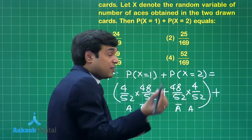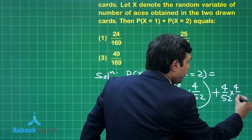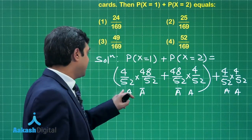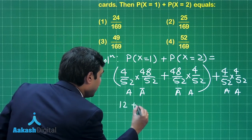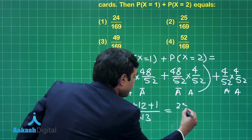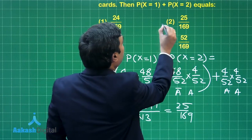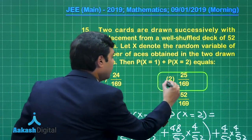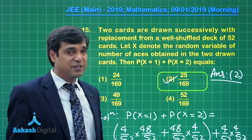For P(X=2), meaning both cards are aces: (4/52) multiplied by (4/52). Simplifying, 4/52 becomes 1/13 and 48/52 becomes 12/13. So we get (1/13)(12/13) + (12/13)(1/13) + (1/13)(1/13), which is (12 + 12 + 1) divided by 169, equal to 25 by 169. This is given as option number 2. A simple probability question involving random variables.